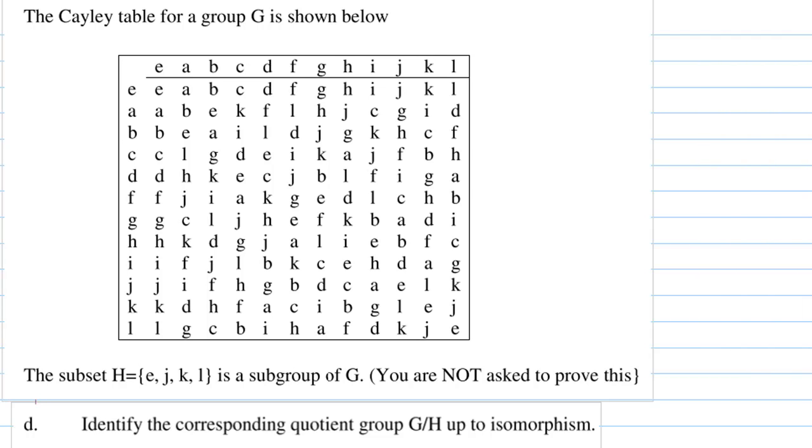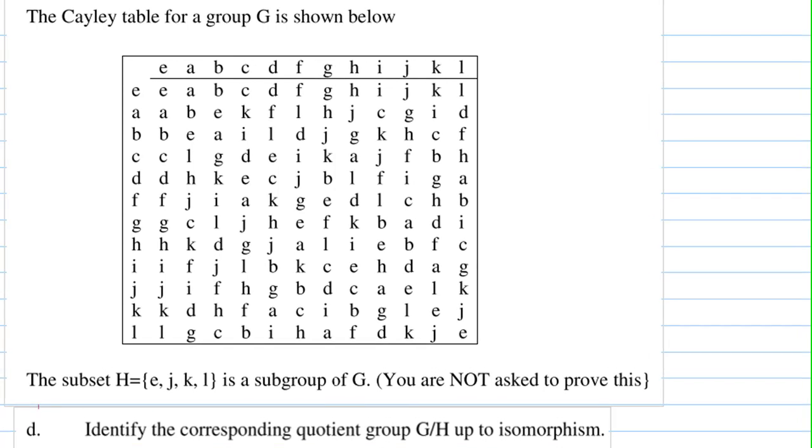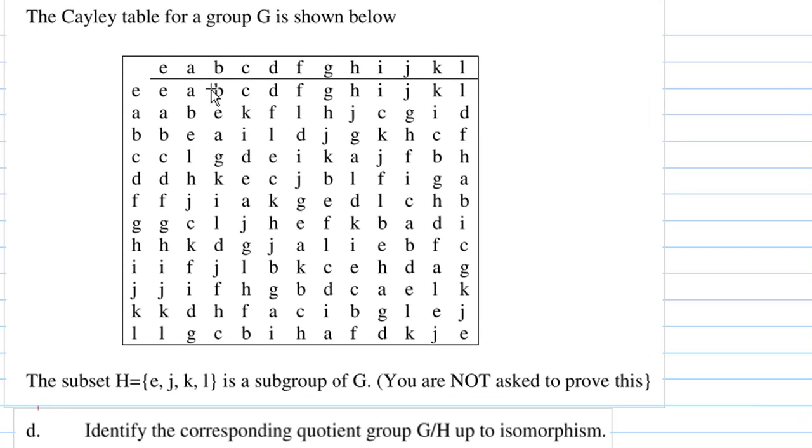Hi, for this recording, I'm going to show you how to find the quotient group of a normal subgroup in a group G. We are given a Cayley table of a group G and also a subgroup H equals E, J, K, L.